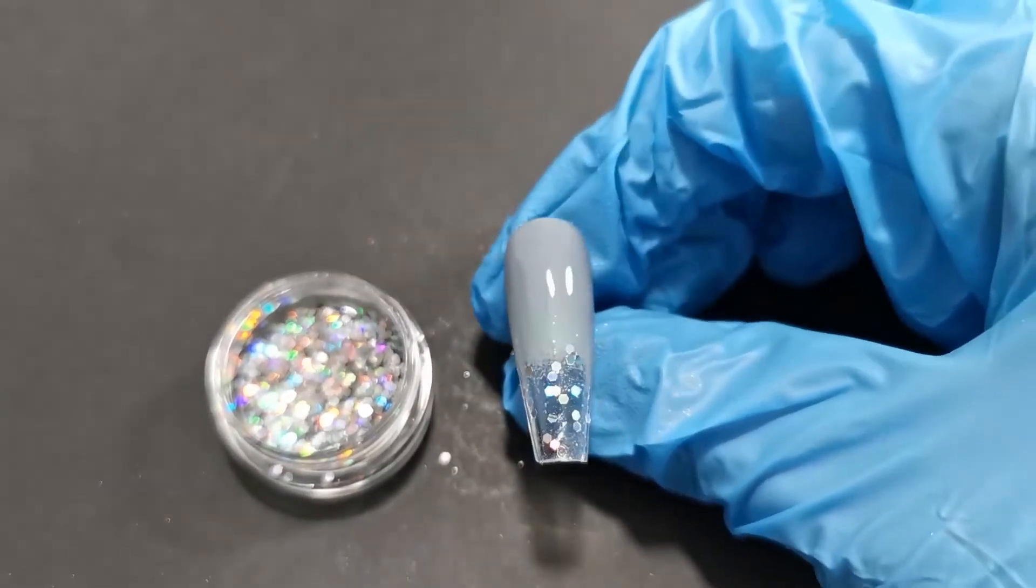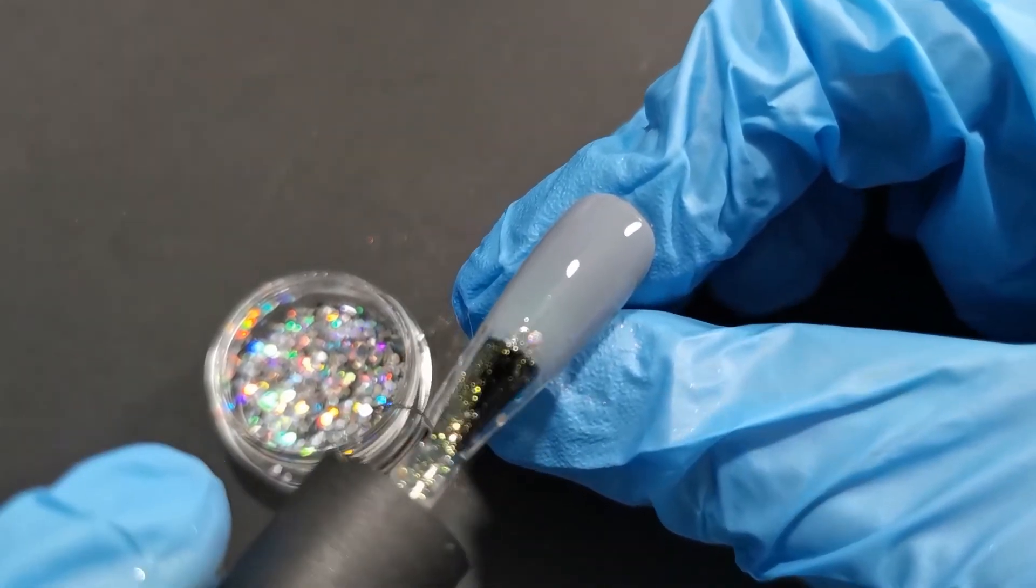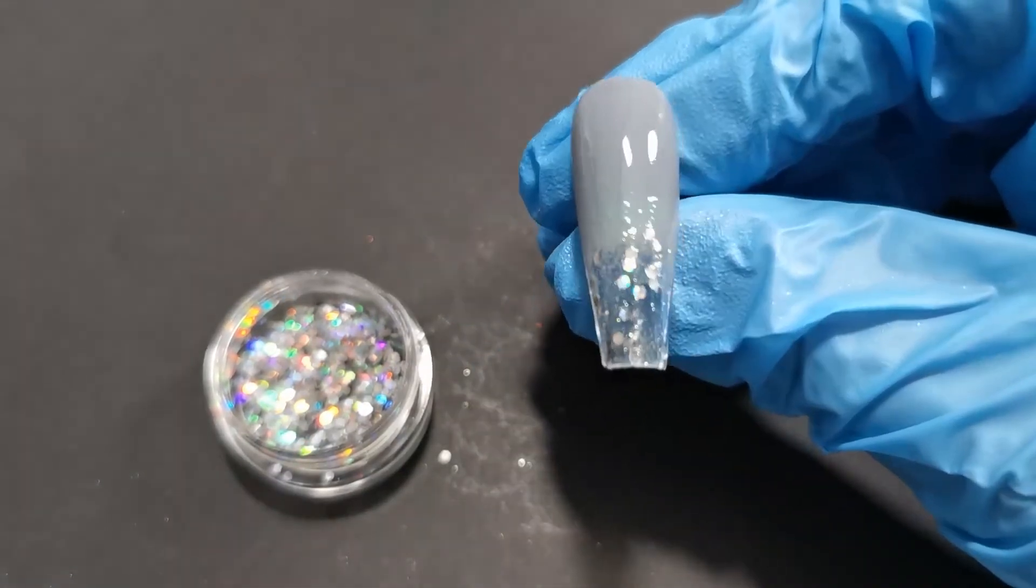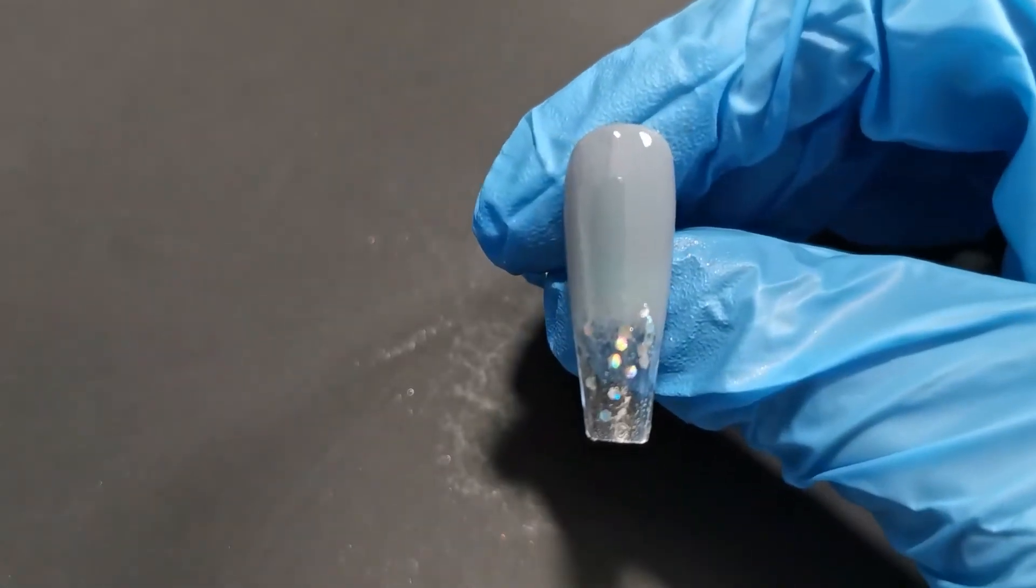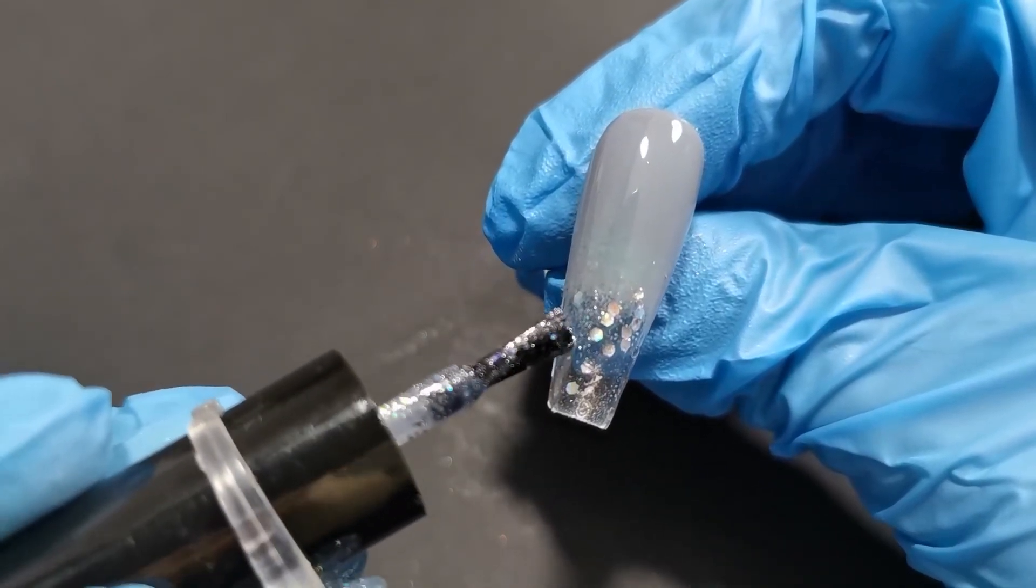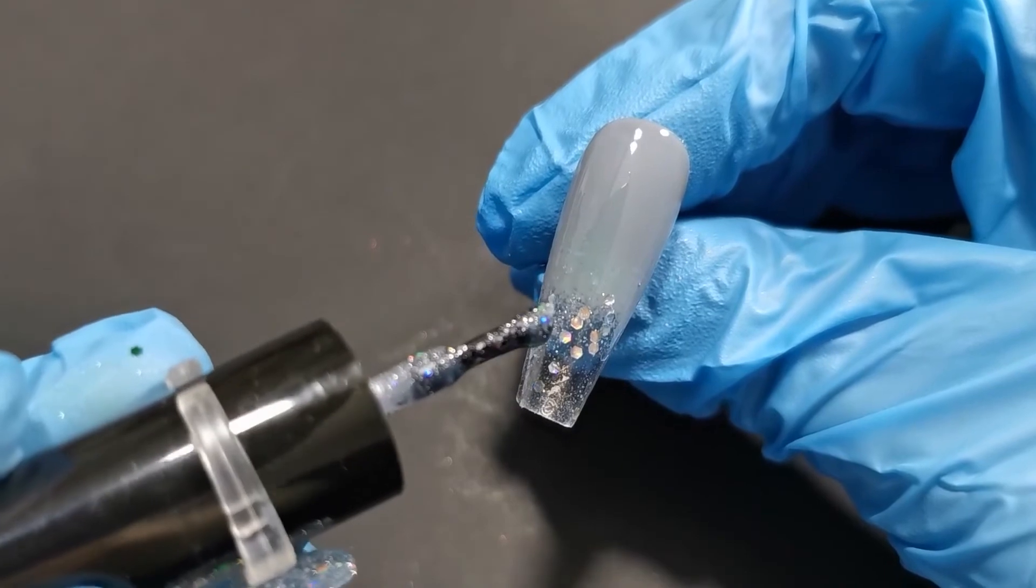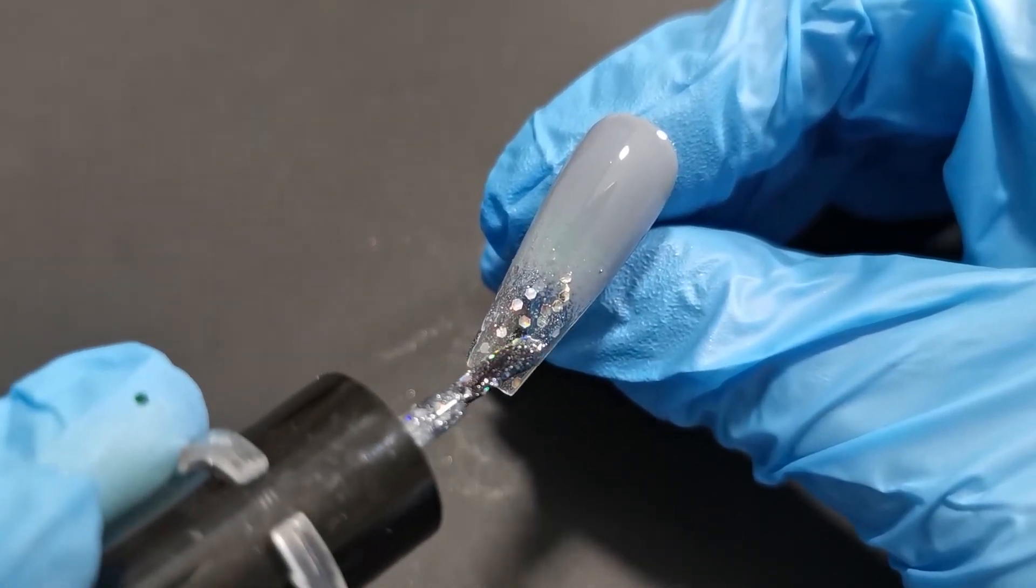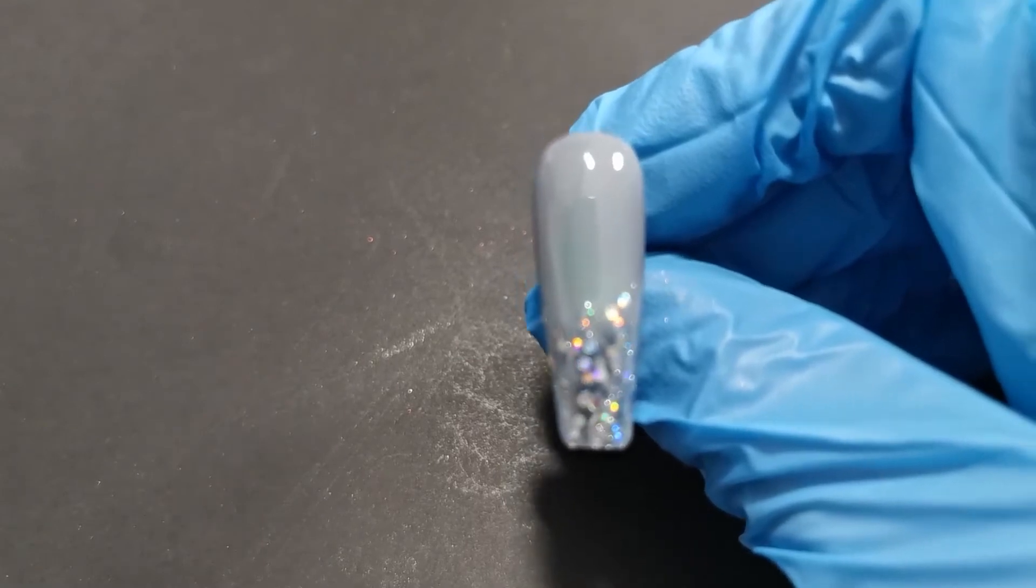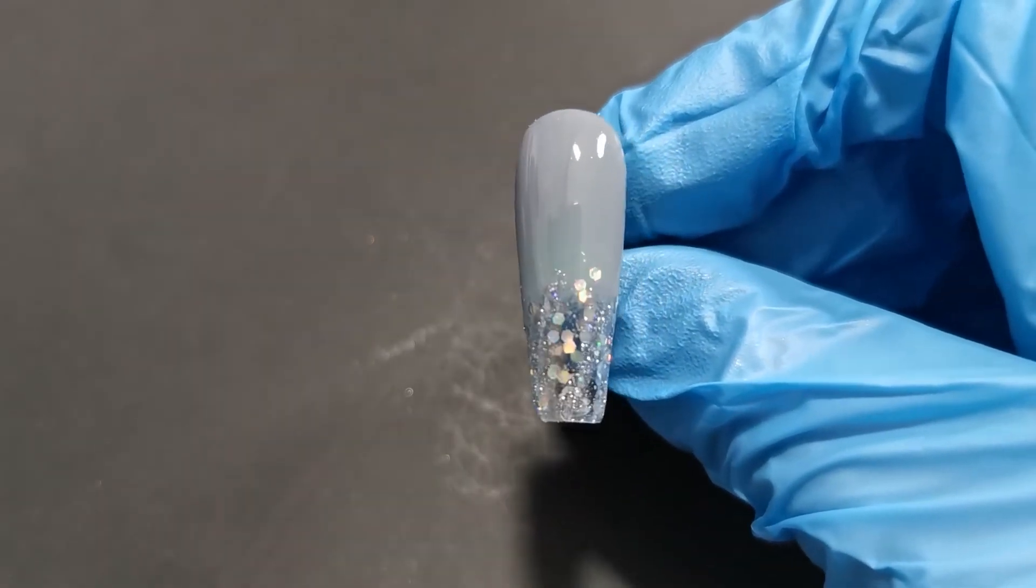Now I'm going to go in with that glittery gel polish. I'm going to pop that in the lamp to cure. So I'm just going to go in and I'm not going to cover the whole thing, I'm just going to go in and just drag it down in like a swirl and just build that up.